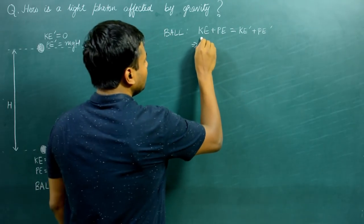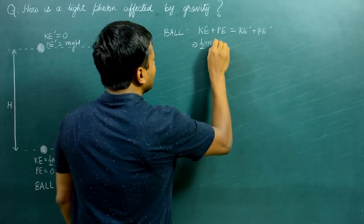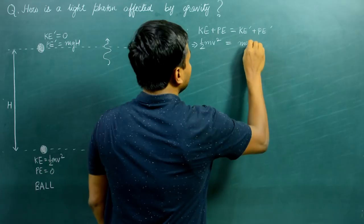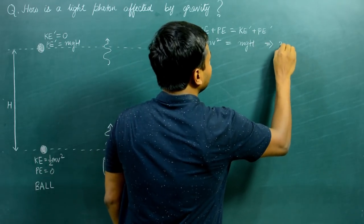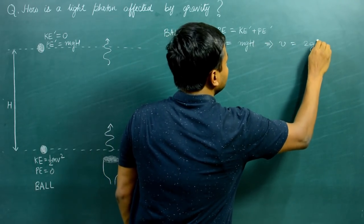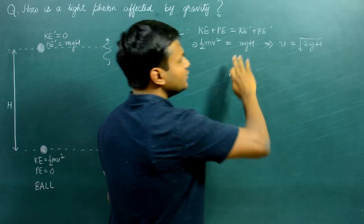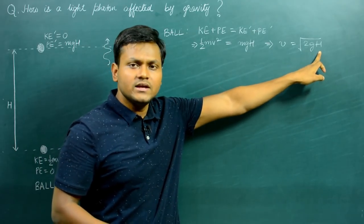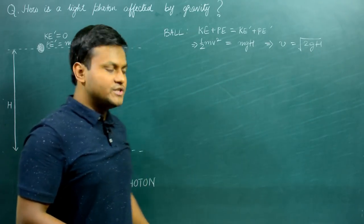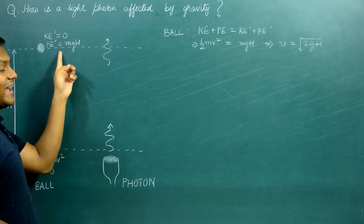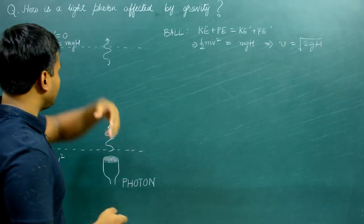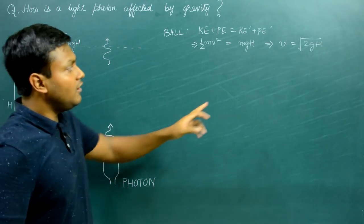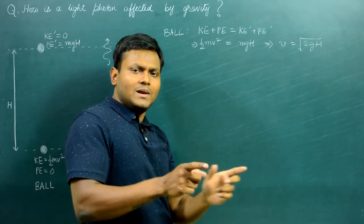So this is: ½mv² + 0 = MgH + 0, which gives us v = √(2gH). This is a very simplistic calculation — it gives us a relationship between the height traveled by the ball and its velocity. If I give it a velocity v it will travel a height H. The reverse is also true: if I drop the ball from height H, it will gain a velocity v at the bottom.